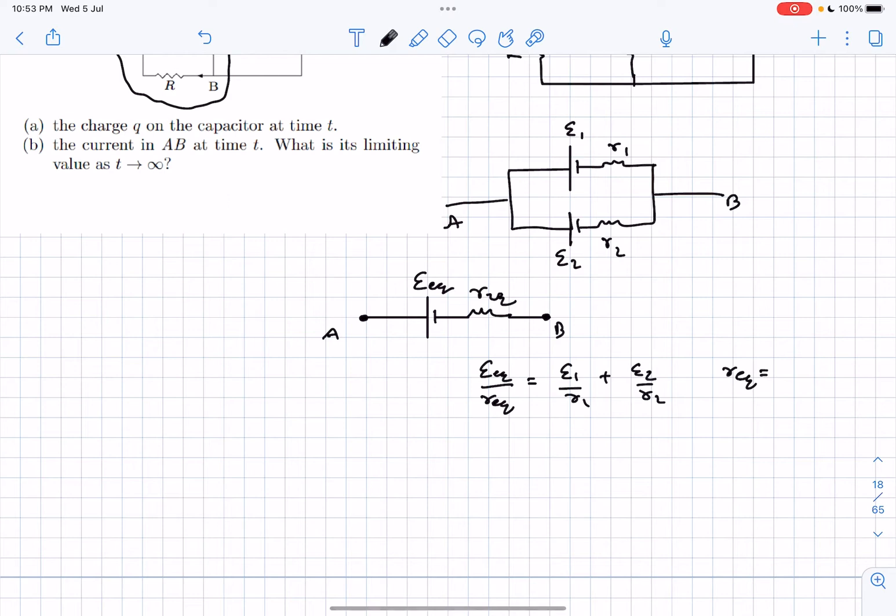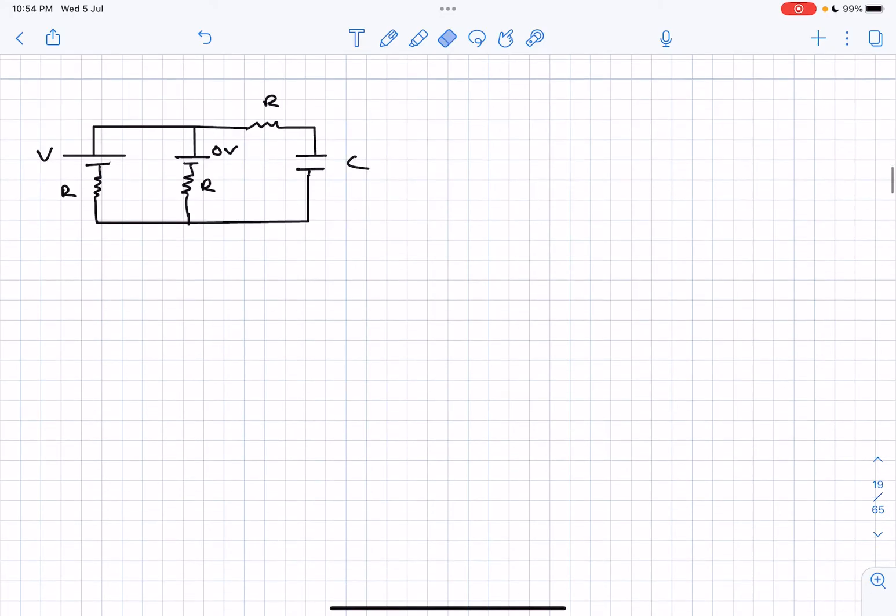The R equivalent is simply the formula we use for parallel resistors: R1 R2 upon R1 plus R2. Going back to our original circuit, as R and R are in parallel, the R equivalent is R by 2.